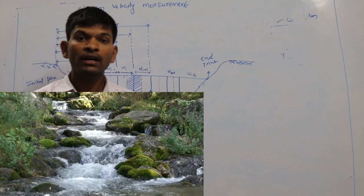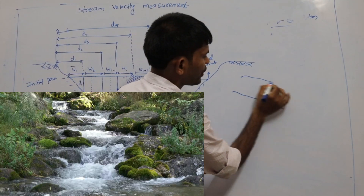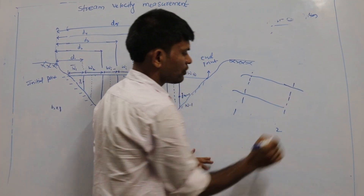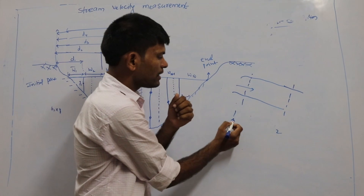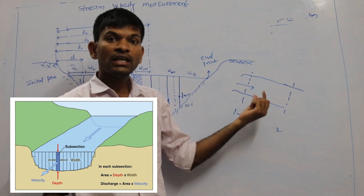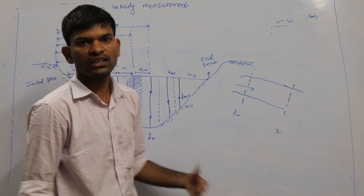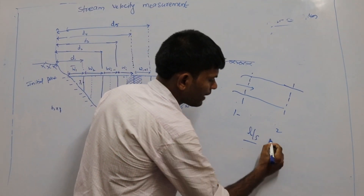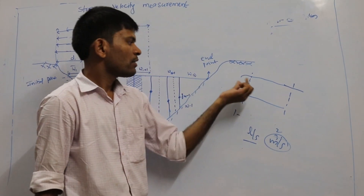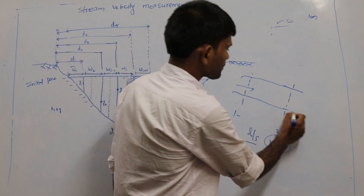Motion condition means the amount of water flowing from one point to another. Suppose this is a river flowing water from point one to point two — the amount of water moving from section one to section two with respect to time. That is why we call it water in motion condition. The units are liters per second or cubic meters per second.